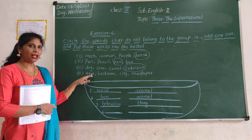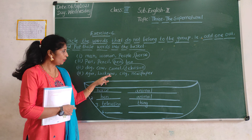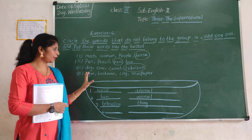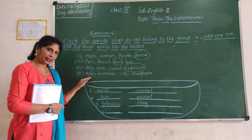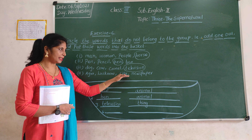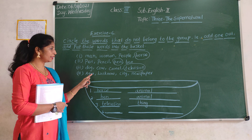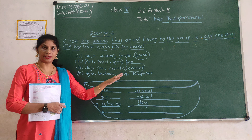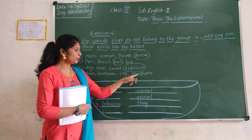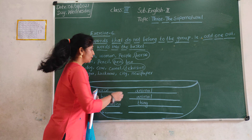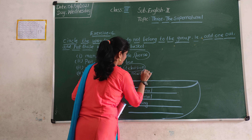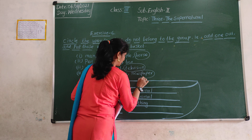Next: Agra, Lucknow, city, newspaper. Which one is the odd one out? Agra, Lucknow, city are places. So newspaper is a thing — newspaper is the odd one out.